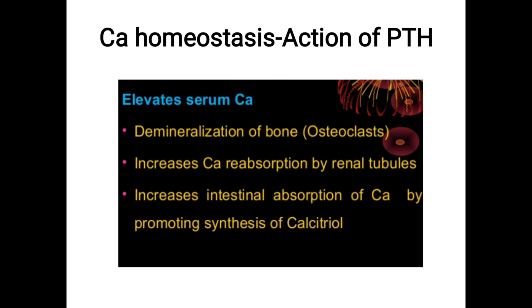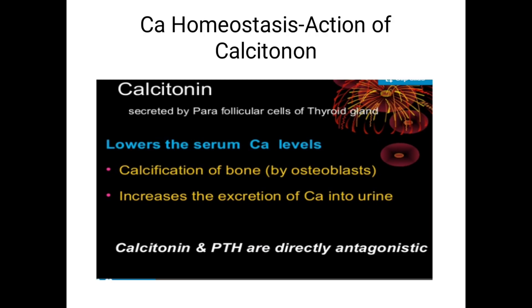The action of parathormone is again hypercalcemic — it increases serum calcium level by demineralization of bone, meaning removing calcium from the bone. It also increases calcium reabsorption by renal tubules and increases intestinal absorption of calcium by promoting synthesis of calcitriol. That is the indirect action of parathormone.